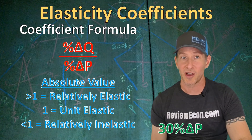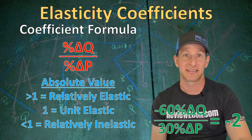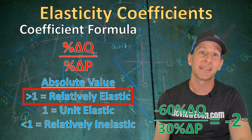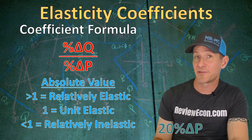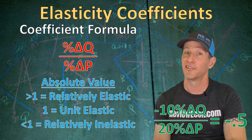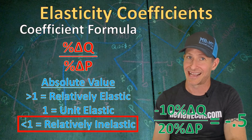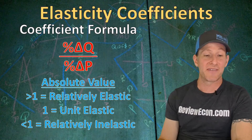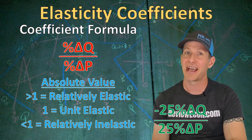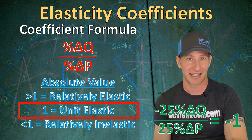For example, a 30% increase in price resulting in a 60% decrease in quantity demanded gives a price elasticity of negative 2 — an absolute value greater than 1, meaning the demand curve is relatively elastic. If instead we have a 20% price increase resulting in a 10% decrease in quantity demanded, the coefficient is 0.5, which is less than 1, so the demand curve is price inelastic. A 25% price increase resulting in a 25% decrease in quantity demanded gives a coefficient of negative 1 — unit elastic.